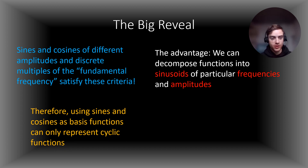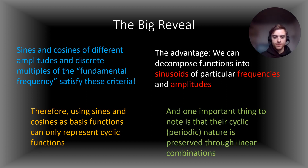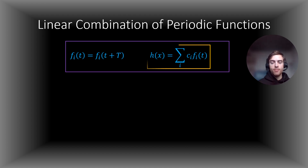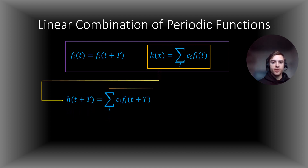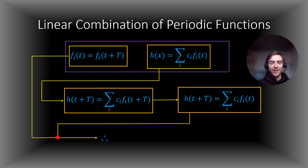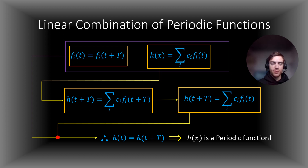Using sines and cosines as basis functions means we can only represent periodic functions — that's going to be important. The important thing to note is that their cyclic nature is preserved through linear combinations, and I will show that on the next slide. Here we prove that a linear combination of a set of periodic functions must also be a periodic function with the same period, big T. So if we have a periodic set of functions f_i of t, then a linear combination of these periodic functions h of x will also be a periodic function.